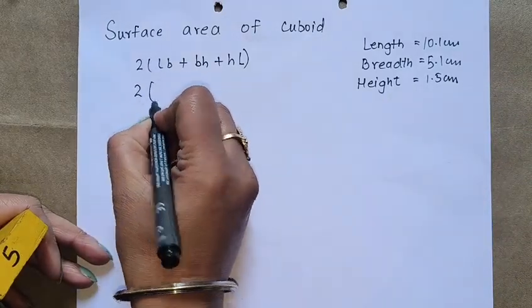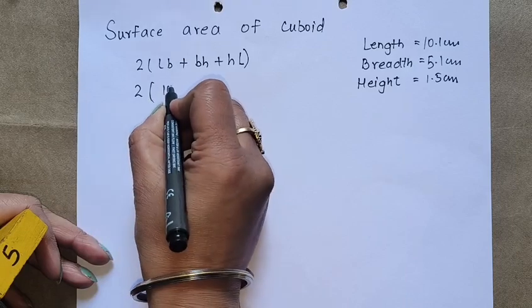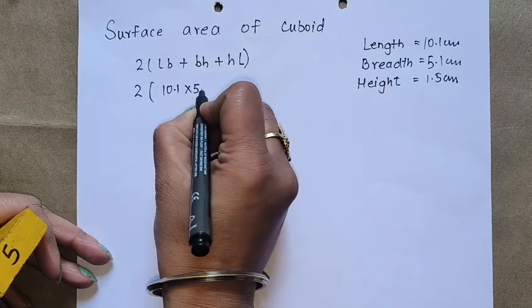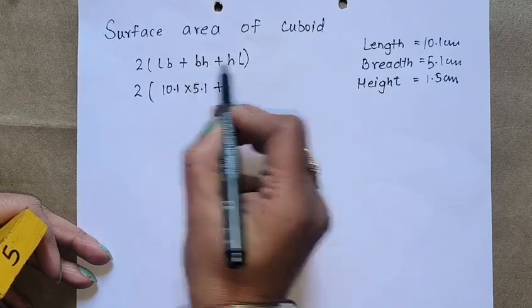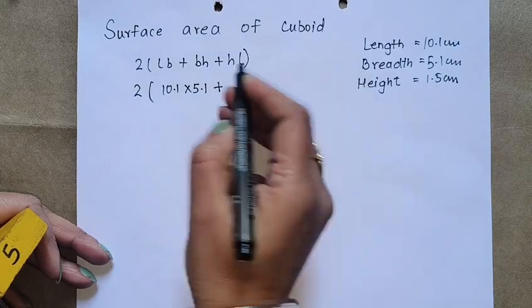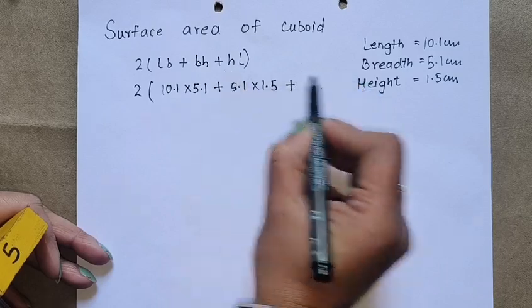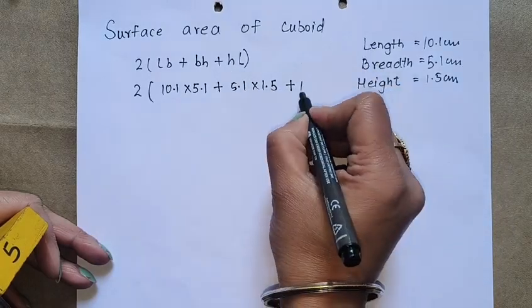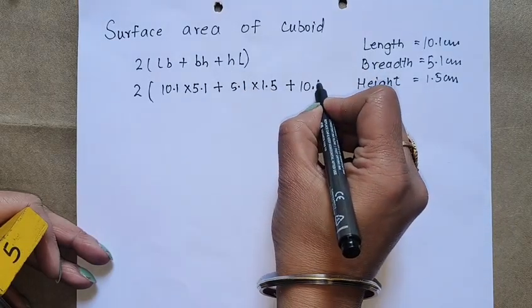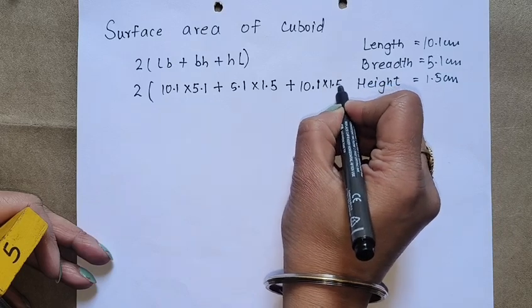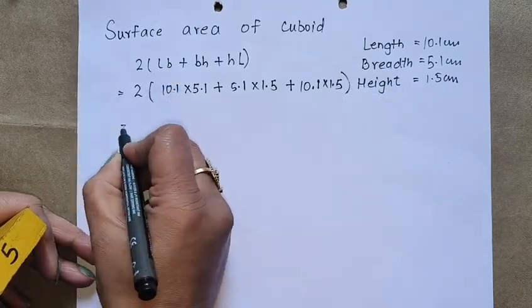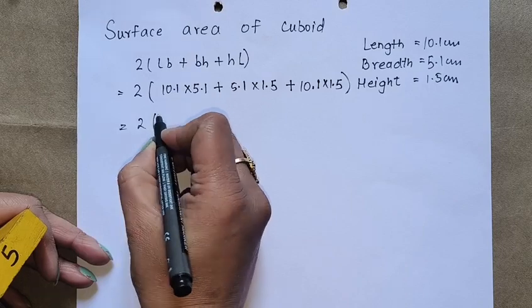The formula is 2 times (length times breadth plus breadth times height plus height times length). That is 2 times (10.1 times 5.1 plus 5.1 times 1.5 plus 10.1 times 1.5). Now when we calculate it, we'll get the individual products.